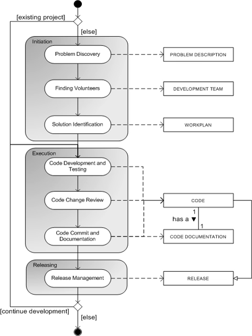The second is the progressive open-source development, which is more like a great babbling bazaar of differing agendas and approaches out of which a coherent and stable system could seemingly emerge only by a succession of miracles. The latter analogy points to the discussion involved in an open-source development process. Differences between the two styles, according to Barr and Fogel, are in the handling and creation of bug reports and feature requests, and the constraints under which programmers are working.